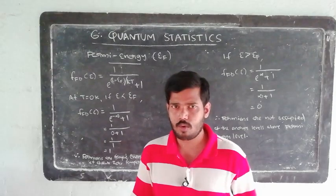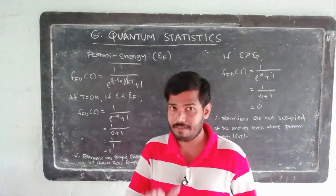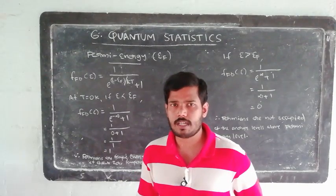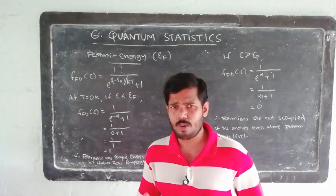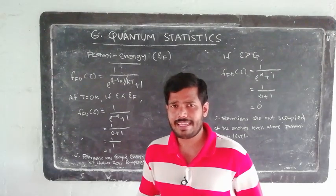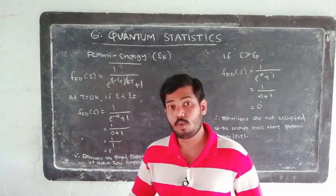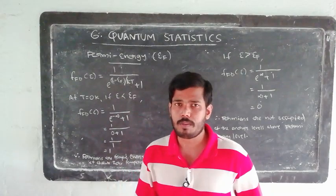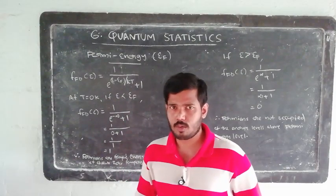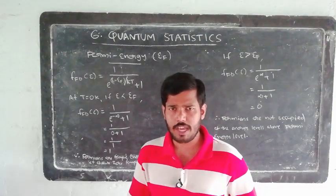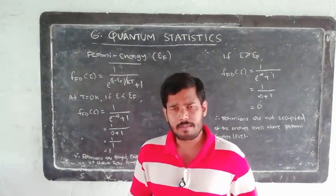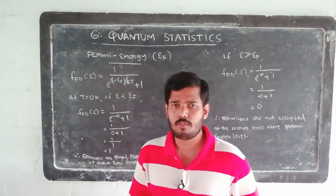At absolute zero temperature, fermions occupy all energy levels up to the Fermi energy level and none above it. The Fermi energy level represents the highest energy level occupied by fermions at absolute zero temperature. As temperature increases, fermions can occupy higher energy levels above the Fermi energy level.